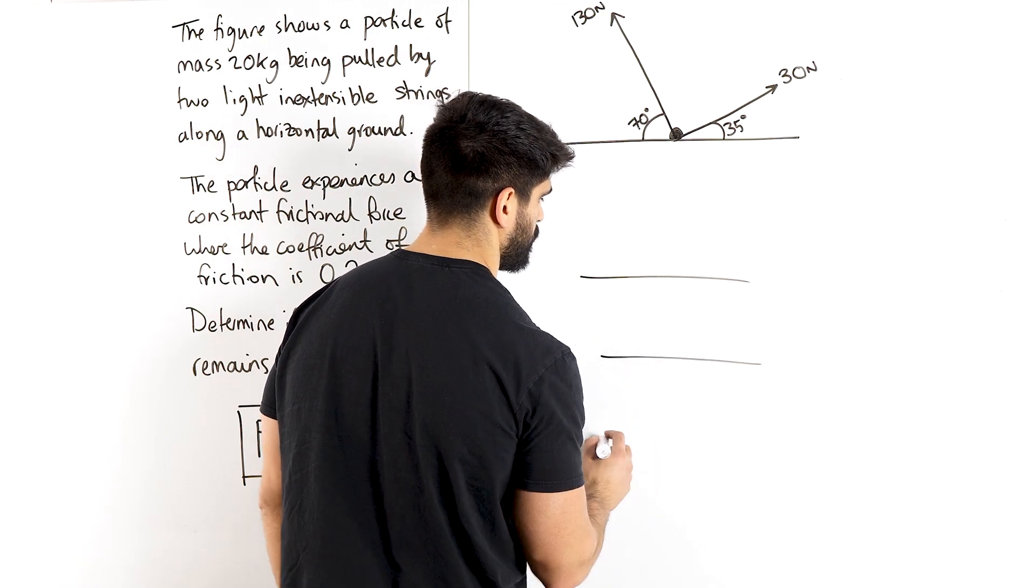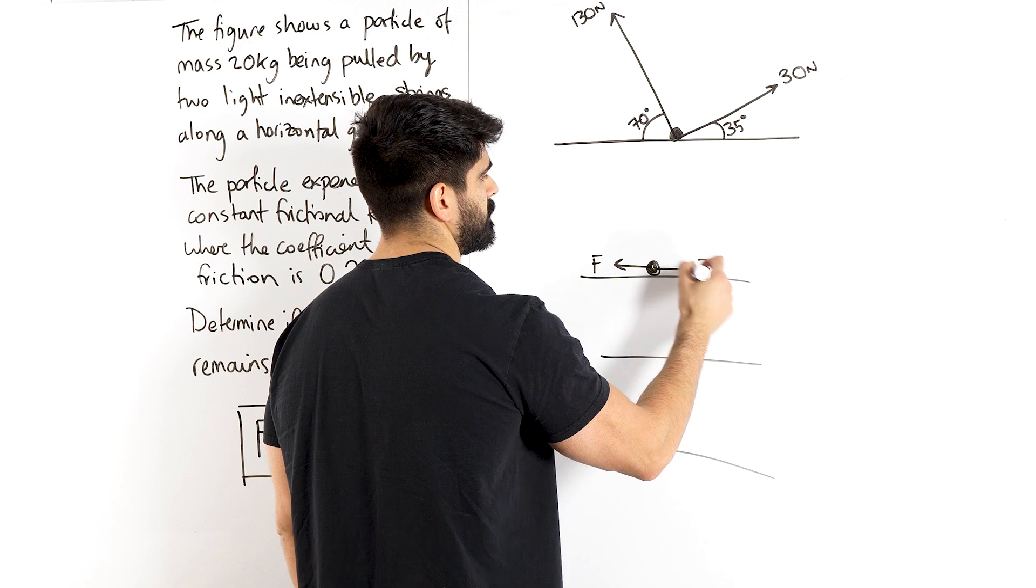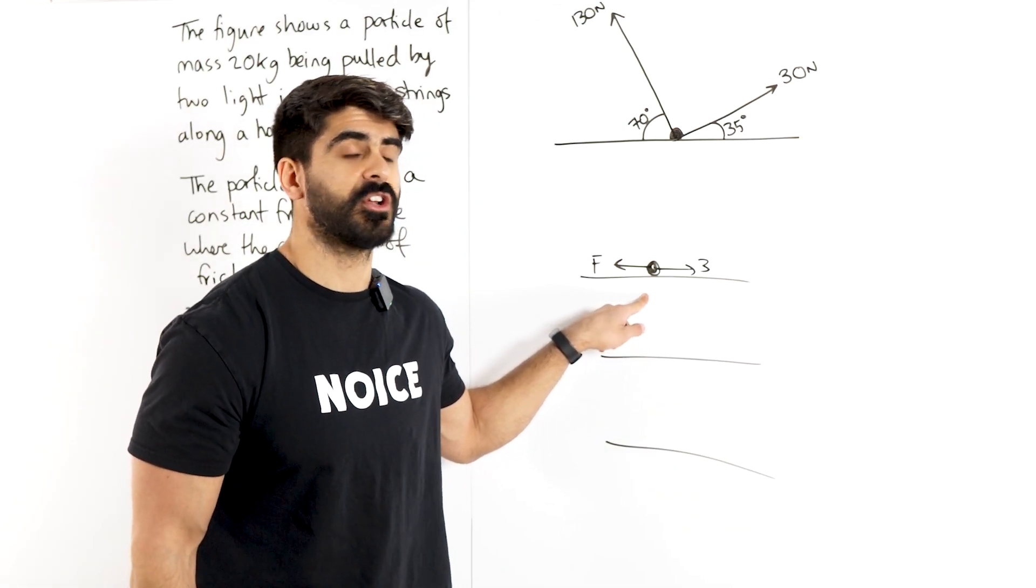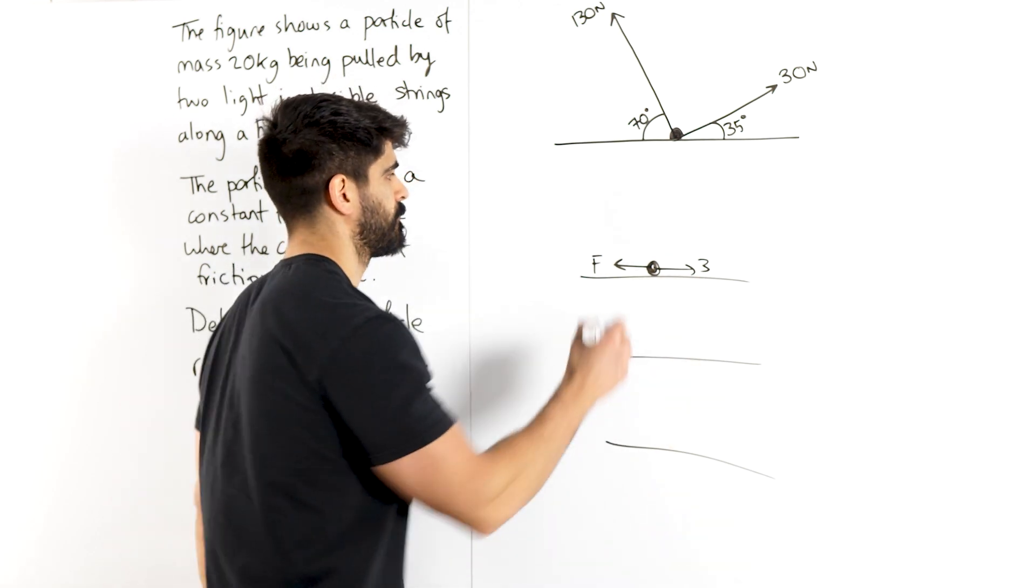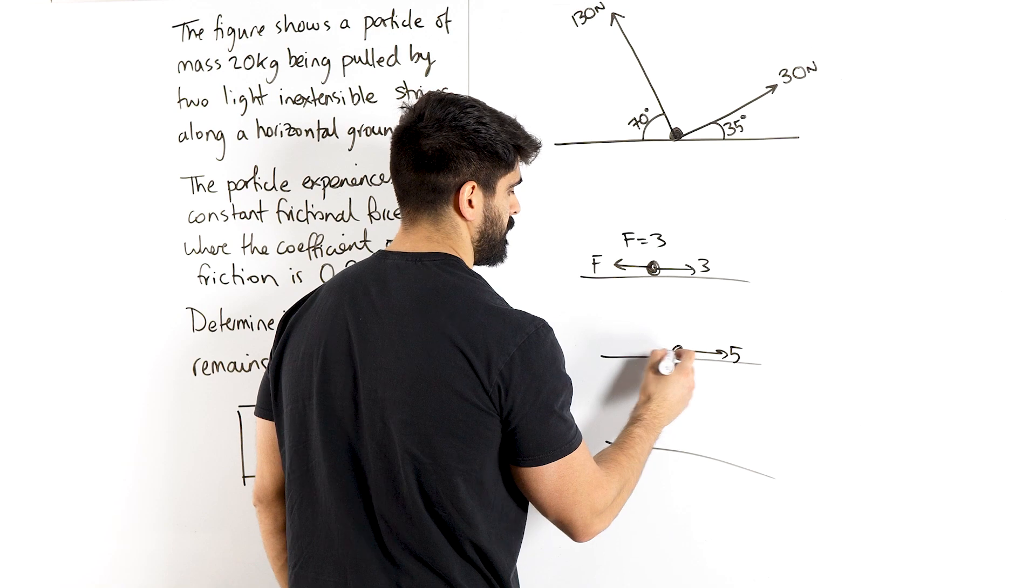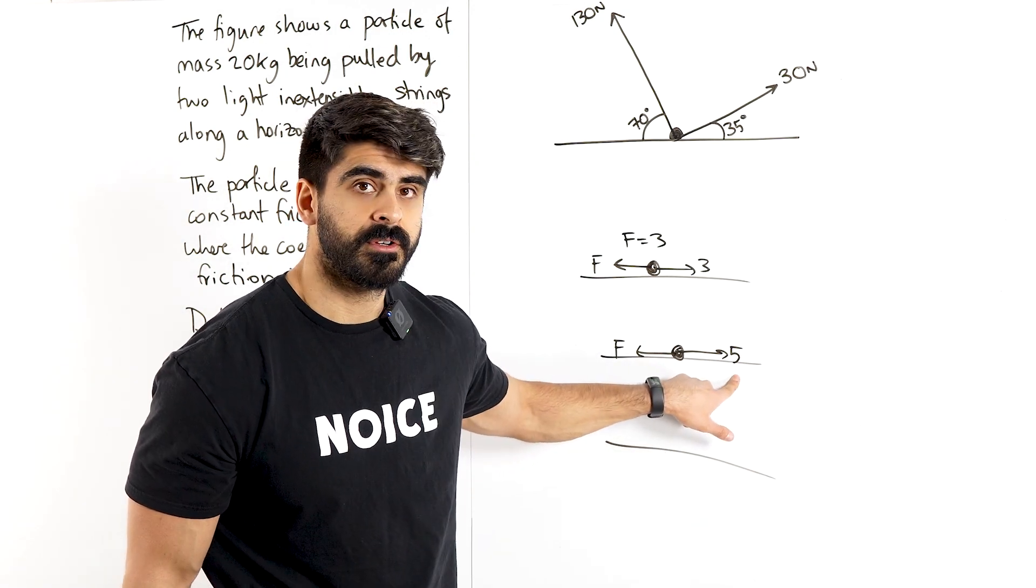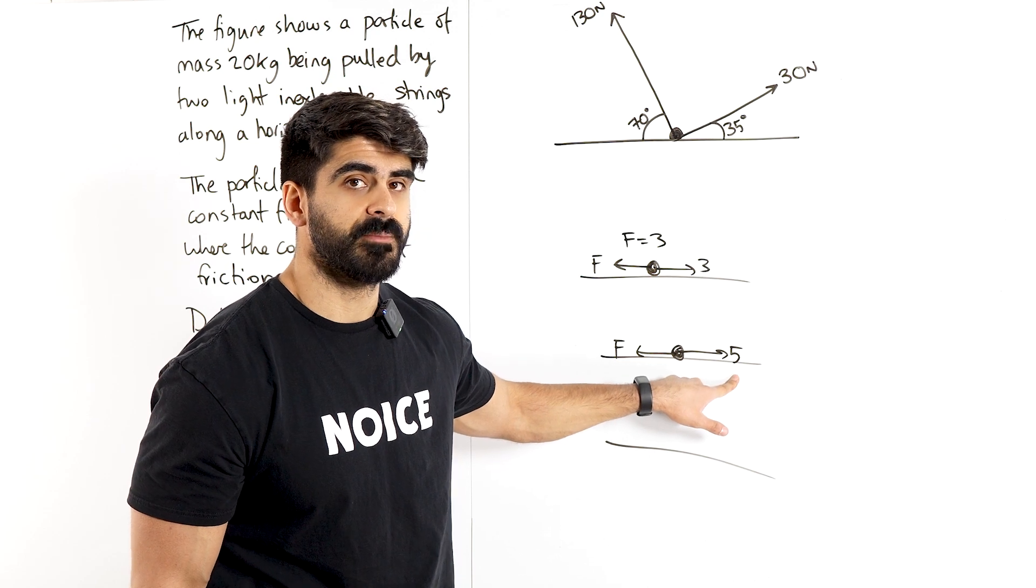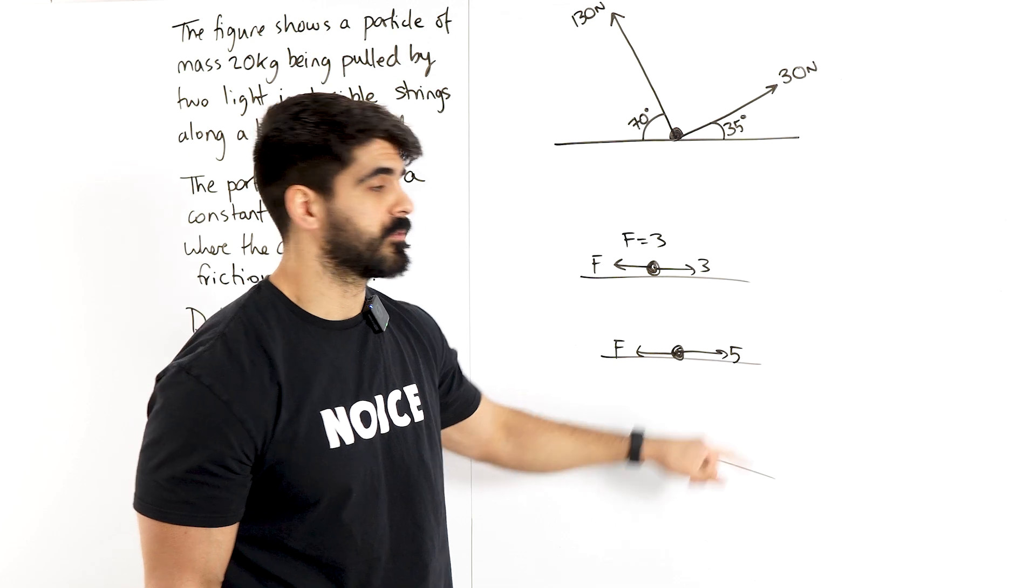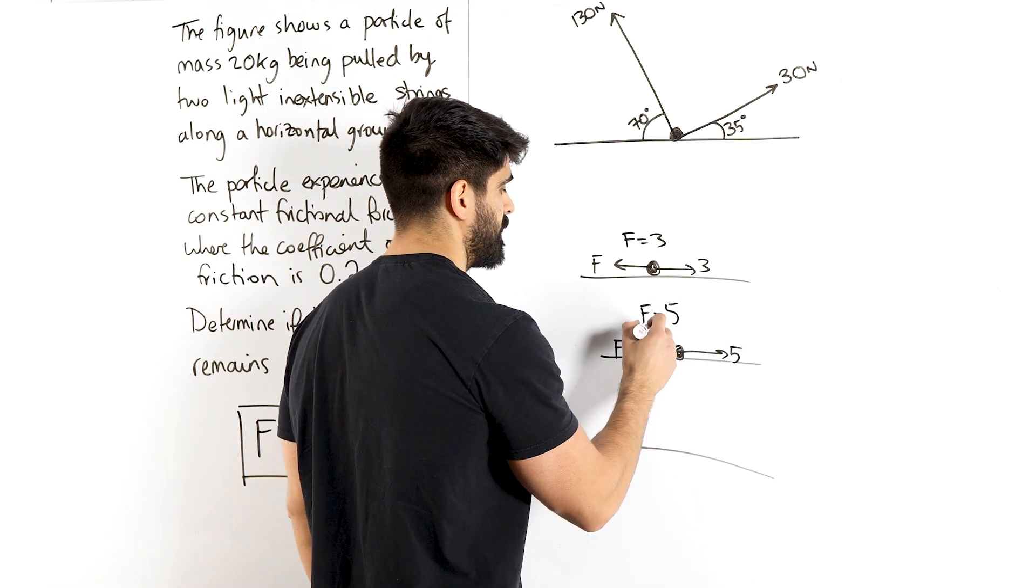if I give you guys three situations, we have a particle here, we have friction, and three. I'm going to tell you guys that it's not moving. It's not moving, so friction must be three. Let's give you another scenario. Five and F. It's not moving, but any more of this, it will start moving. We call this limiting equilibrium. Friction is still five. It's not moving, right?